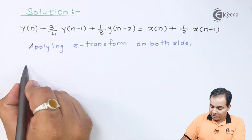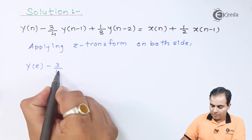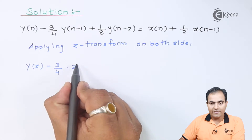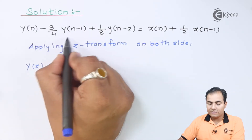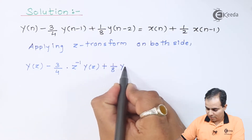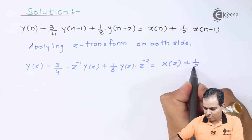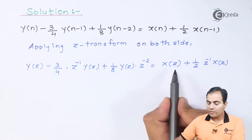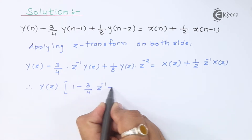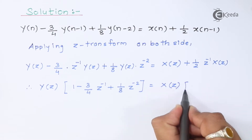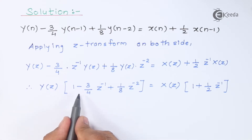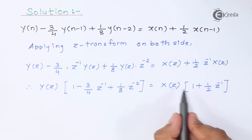The Z transform of y(n) is Y(z), minus 3/4 is a constant. Since y(n) is delayed by minus 1, in the Z transform we place that shift as a power of z, giving z⁻¹ multiplied by Y(z). Doing the same for subsequent terms, we then take Y(z) common from the left side and X(z) common from the right side, yielding Y(z) times [1 minus 3/4 z⁻¹ plus 1/8 z⁻²] equals X(z) times [1 plus half z⁻¹].